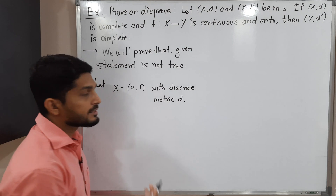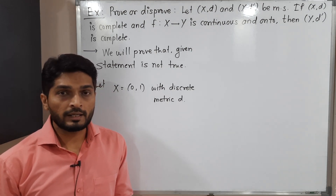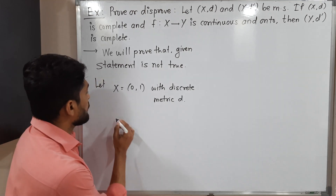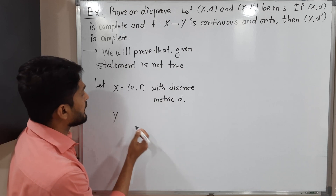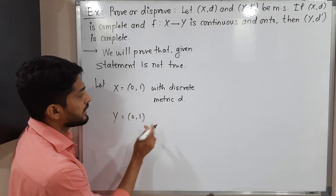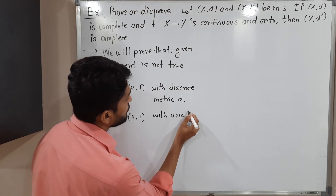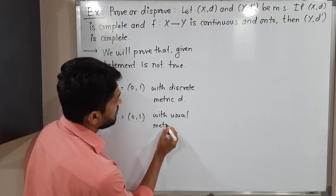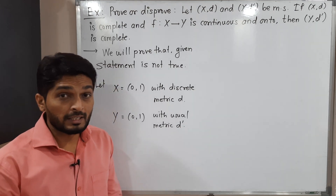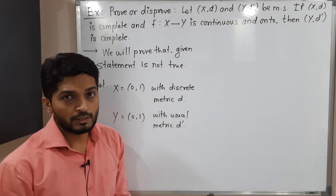We are familiar with the discrete metric. Its definition is: d(x, y) = 0 if x = y, and d(x, y) = 1 if x ≠ y. For the second metric space (Y, d'), I am taking Y = (0, 1) again — the same set but with the usual metric d'. Generally we denote the usual metric by d_u but here I denote it d' to keep consistent notation.